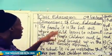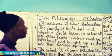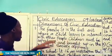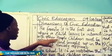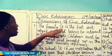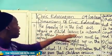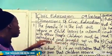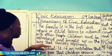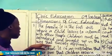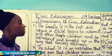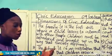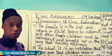We are starting with the family. The family is the first unit where a child learns to interact with other people. Children must be raised in the way that society approves. The family is the first place where we interact with people.